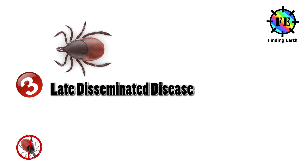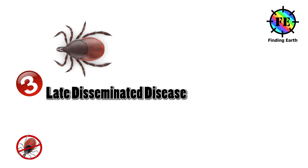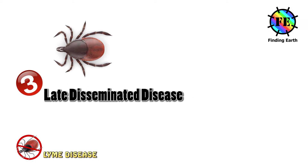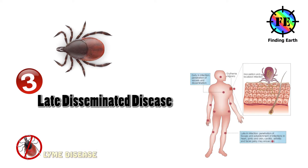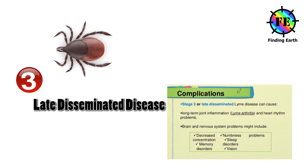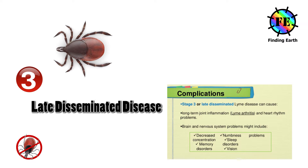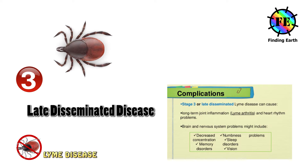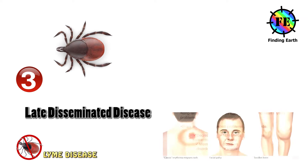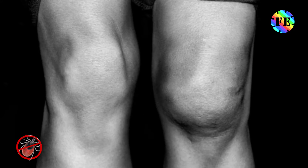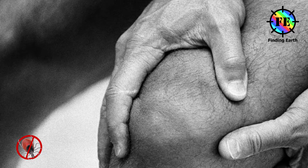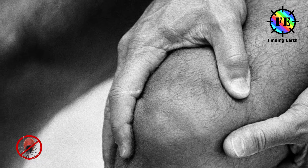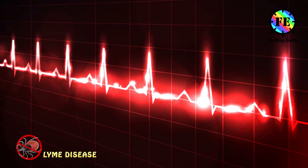Stage 3: Late Disseminated Lyme Disease occurs when the infection hasn't been treated in stages 1 and 2. Stage 3 can occur weeks, months, or years after the tick bite. This stage is characterized by severe headaches, and bouts of severe joint pain and swelling — especially likely to affect your knees, but the pain can shift to other joints.